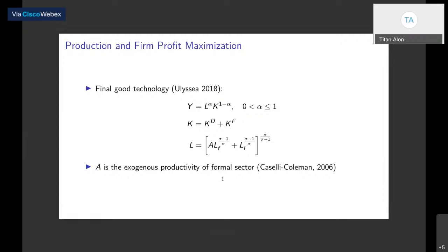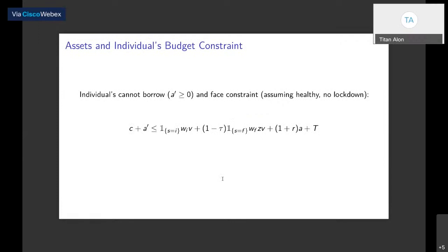Pulling this together: the household is maximizing lifetime utility, making decisions on consumption and savings subject to a budget constraint. Sources of income are savings A, government transfers T — which might be augmented during lockdown policies — and income from either the informal sector, which is just a function of wage times idiosyncratic productivity, or the formal sector, which includes permanent productivity, idiosyncratic productivity, and the formal sector wage, minus government taxes. Note there are no government taxes on the informal sector, reflecting the limited state purview over informal activity.